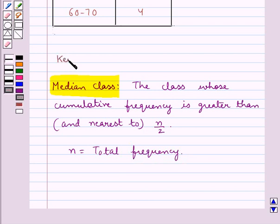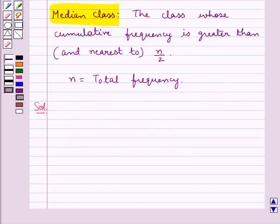This is the key idea that we use in this question. Let's proceed with the solution now. To find the median class, we find the cumulative frequencies of all the classes and also find n/2. First, let's find out the cumulative frequency for all the classes.